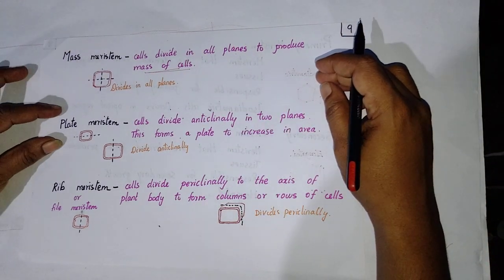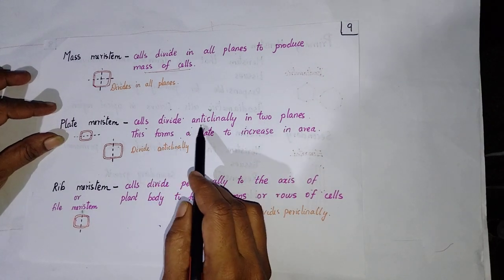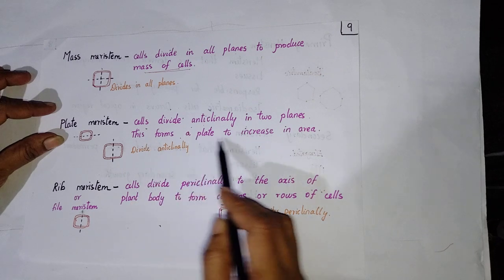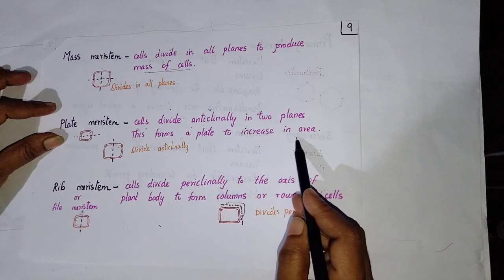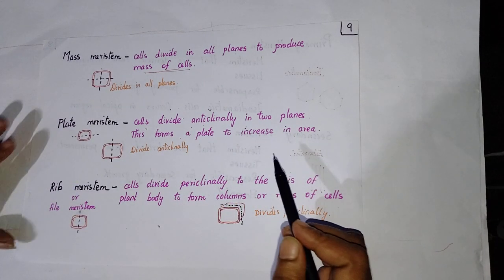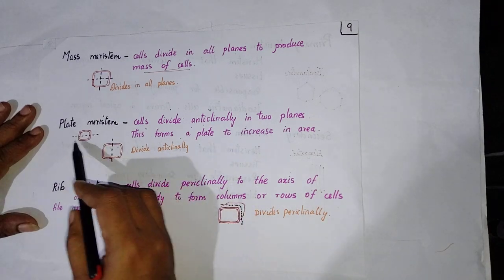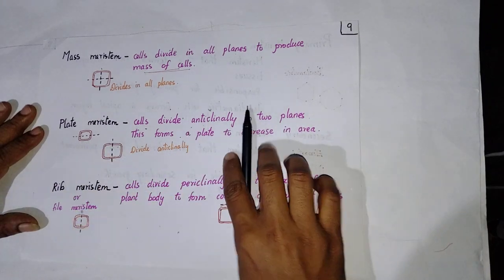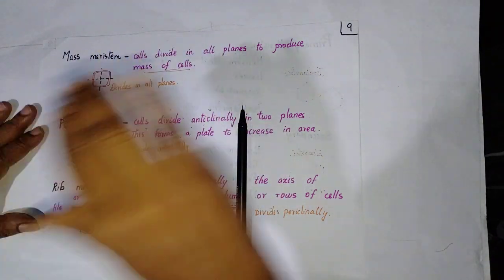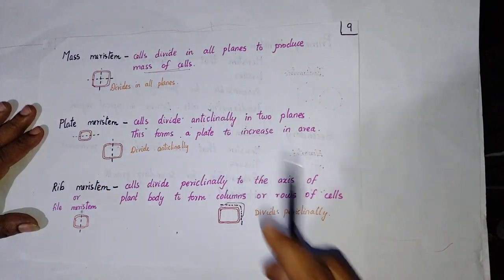Next is the plate meristem. In plate meristem, the cell divides anticlinally in two planes, forming a plate to increase the area. The plate meristem can be of two types: it can divide in a vertical position or in a horizontal position.